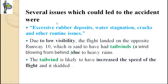There are a number of issues which could have led to the accident. First, it is a table top international airport with a runway length of around 2700 meters. It was found prima facie that there were excessive rubber deposits on the runway. Additionally, due to excessive rains, there was water stagnation and cracks on the runway surface.